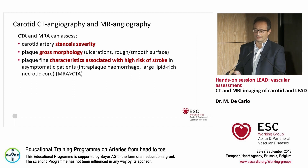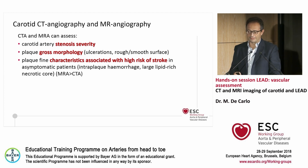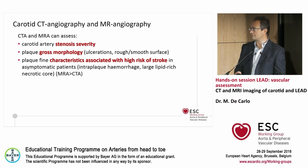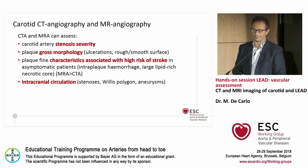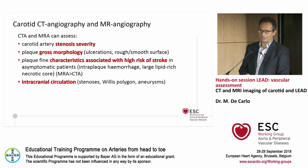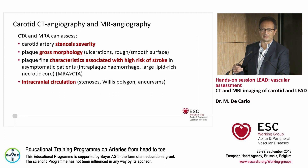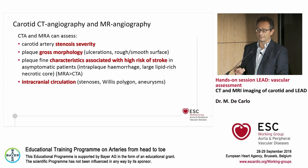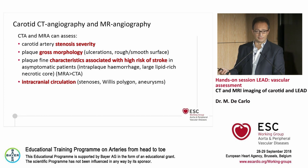With MRA we can get fine characteristics associated with a higher risk of stroke, as we heard before: intraplaque hemorrhage and lipid-rich necrotic core of the plaque. We can assess the intracranial circulation, which is important for identifying stenosis, verifying the presence of the polygon of Willis, and the presence of aneurysms.